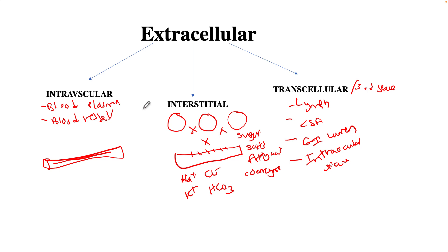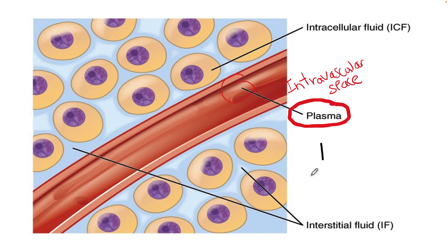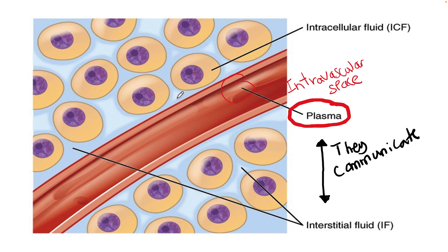The intravascular space and the interstitial space play an important role in exchanging minerals and solvents — they actually communicate with each other. This is possible because the blood vessels have small capillaries between them that allow minerals and solvents to pass back and forth.